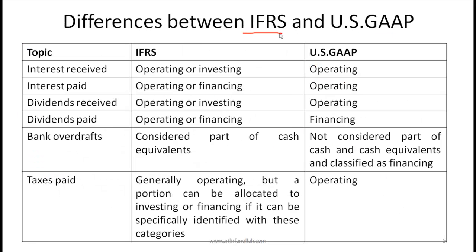The key differences between IFRS and US GAAP: interest received is classified as operating under US GAAP, but IFRS gives flexibility to categorize it as operating or investing. Interest paid must be operating under US GAAP, but under IFRS it can be operating or financing. Dividends received must be operating under US GAAP, but IFRS allows operating or investing. Dividends paid is financing under US GAAP, but IFRS allows operating or financing.